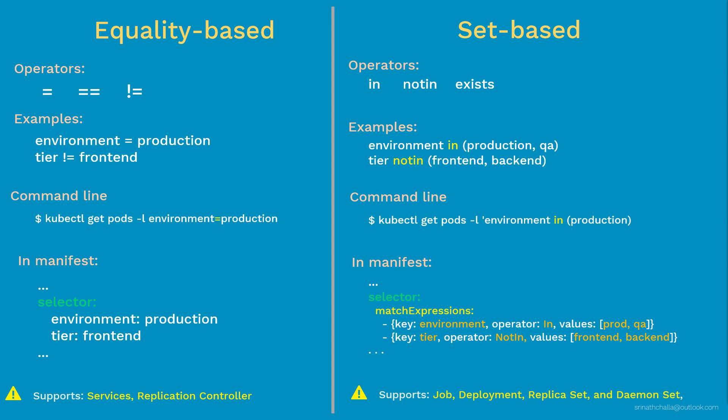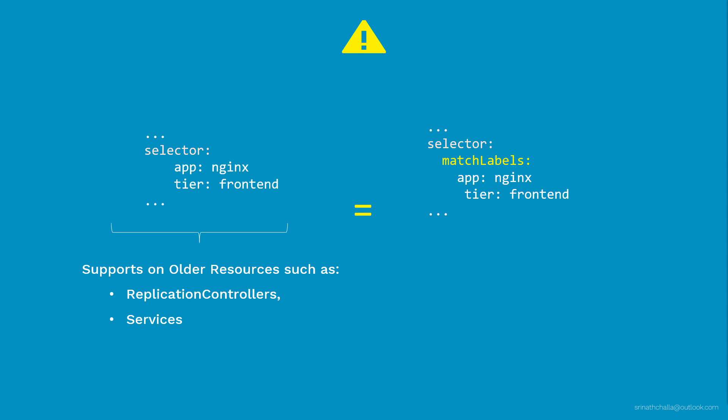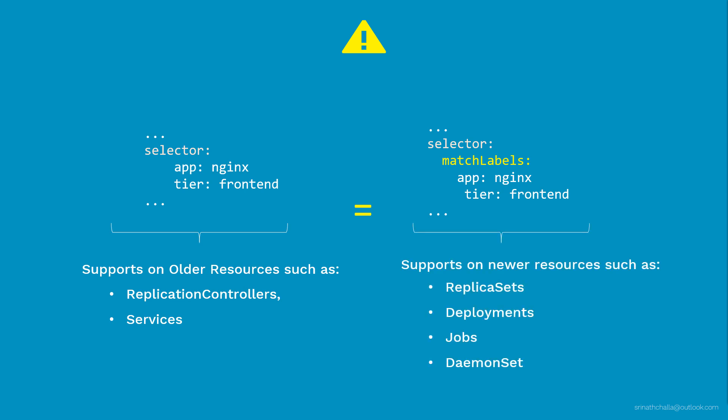Which one to use depends on your requirement. If you are just starting with Kubernetes, practice with equality-based selectors, and once comfortable, start using set-based selectors as needed. In our demo, we will deploy an application with ReplicaSet using both examples. One clarification: you may see spec files with selectors using 'matchLabels' versus without. Selectors without matchLabels are used on older resources like ReplicationController and Services, while selectors with matchLabels are used on newer resources such as ReplicaSets, Deployments, Jobs, and DaemonSets.